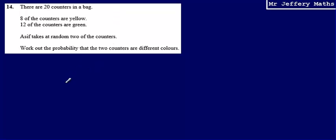This is question 14 from a series of videos taking a look at the Edexcel practice papers. Here we're told that there are 20 counters in a bag, 8 of the counters are yellow, 12 of the counters are green. Then we're told that Asif takes at random 2 of the counters. We're asked to work out the probability that the 2 counters are different colors.